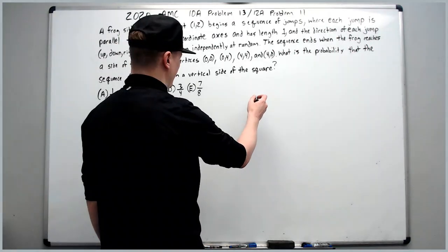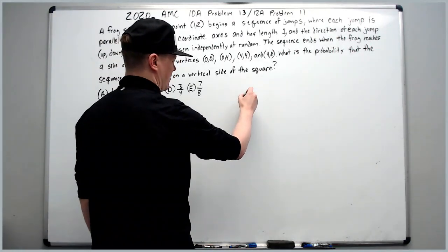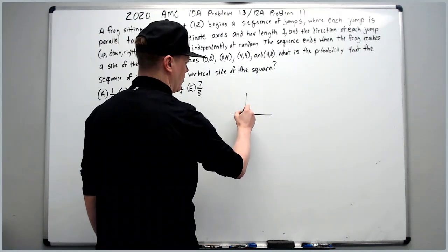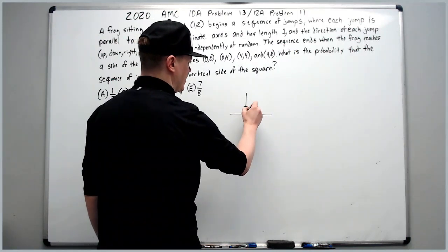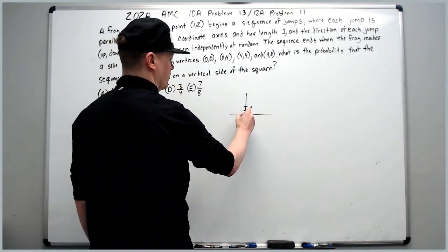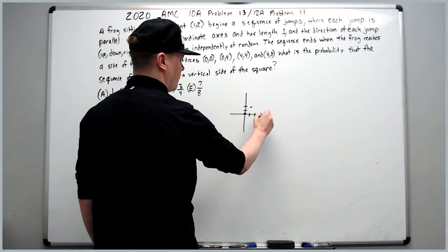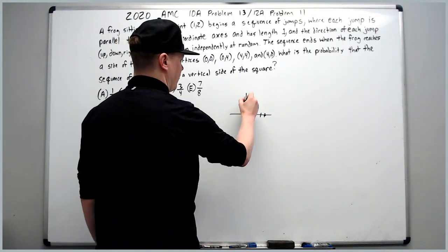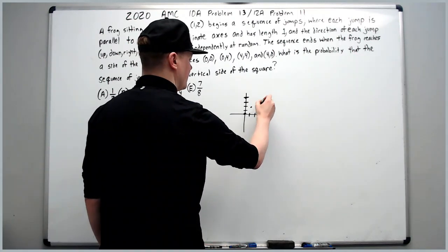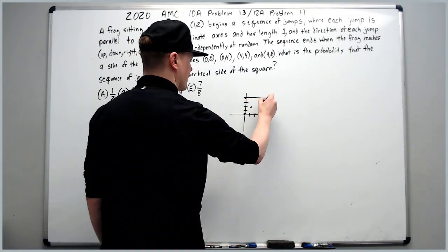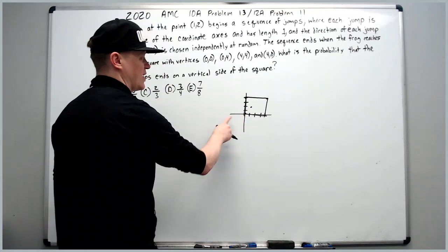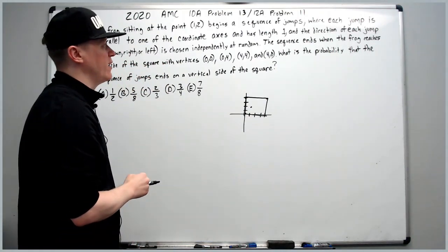To get started, just draw what's happening. You're at the point (1,2). The square has vertices (0,0), (0,4), (4,4), and (4,0). The frog is going to stop when it reaches the side of the square. From the starting point, the frog can reach various positions inside the square.